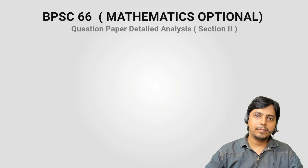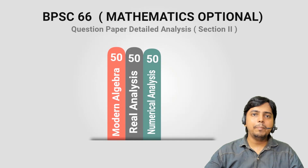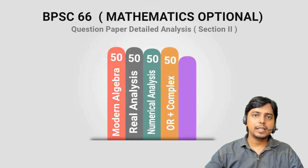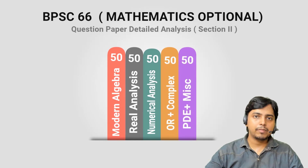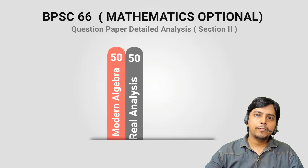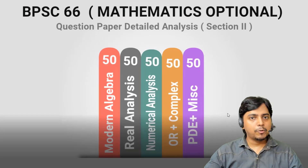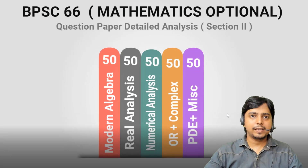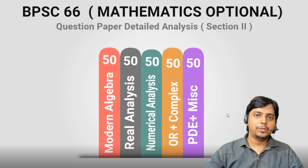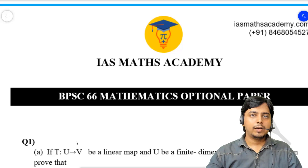Section 2 में Modern Algebra में 50 marks के questions आये हैं, Real Analysis के 50 marks के questions आये हैं, Numerical Analysis के भी 50 marks के questions आये हैं, Operation Research plus Complex Analysis दोनों के एक-एक question आये हैं। अब हम देखते हैं कि किस topic से question आया था और question का level of criticality कैसा था।